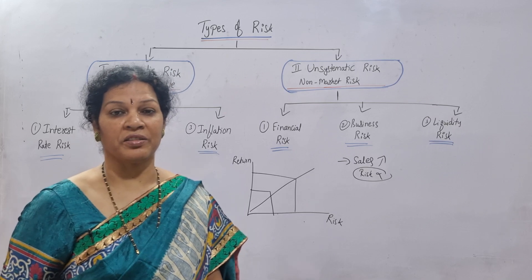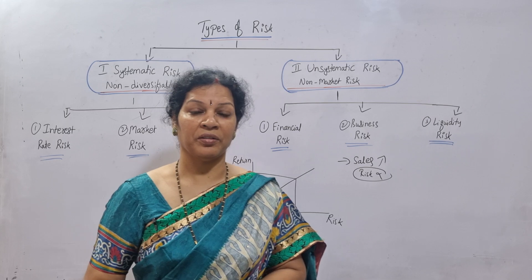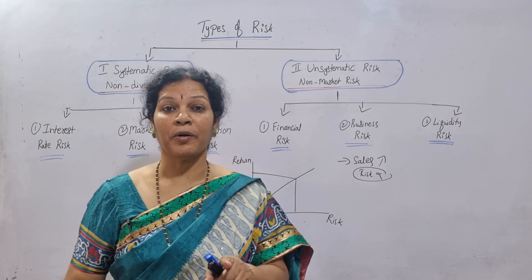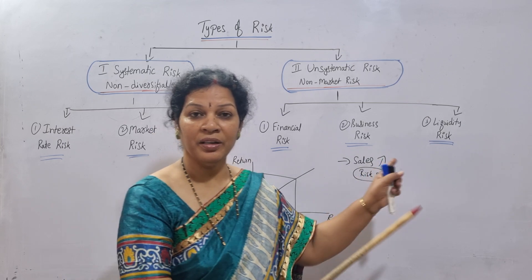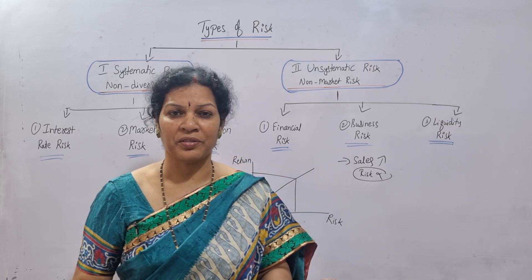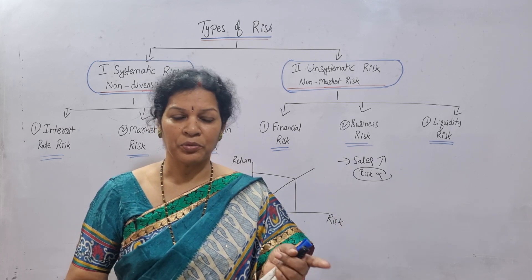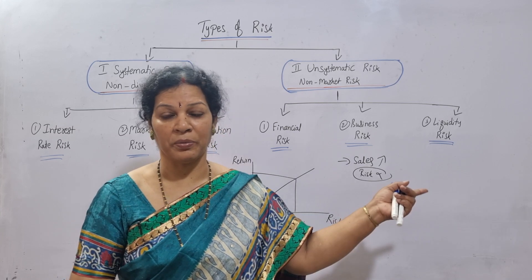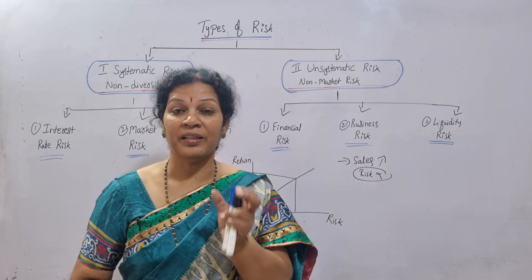The third one is liquidity risk. The organization has to keep minimum liquidity. When sales and purchases are happening properly and you can handle them well, this risk can be covered. But if sales are very less, liquidity will be very less. Also, if you sold on credit and debtors are not paying, that is also liquidity risk. It is in the hands of the organization how to handle it.